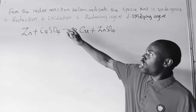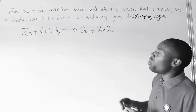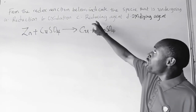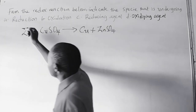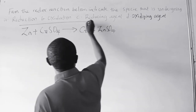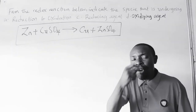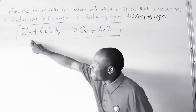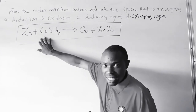If you look at the question on the board, the question says: from the redox reaction below, indicate the species that is undergoing reduction, oxidation, and also identify the reducing agent and the oxidizing agent. Take note that to know whether a species is undergoing reduction or oxidation, it is determined from the reactant, not from the product — from the reactant.